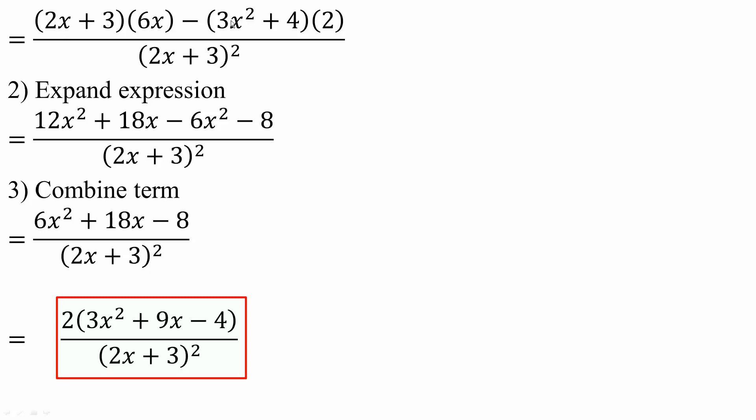2 times 3x squared is 6x squared minus, so minus 6x squared. 2 times 4 is 8 minus, so minus 8 divided by the square of what's below.